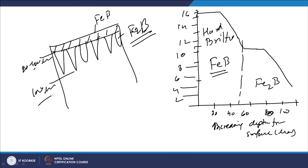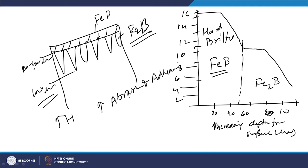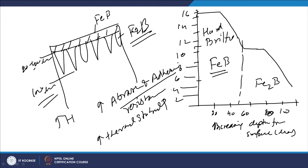Up to about 100 micrometers depth the surface has been enriched with boron. When iron boride is formed in sufficient amount, it increases hardness, and because of this increase in hardness we get increased abrasion and adhesive wear resistance. It also increases thermal stability — meaning resistance to softening is increased — and this also helps in increasing chemical inertness once the iron boride is formed.